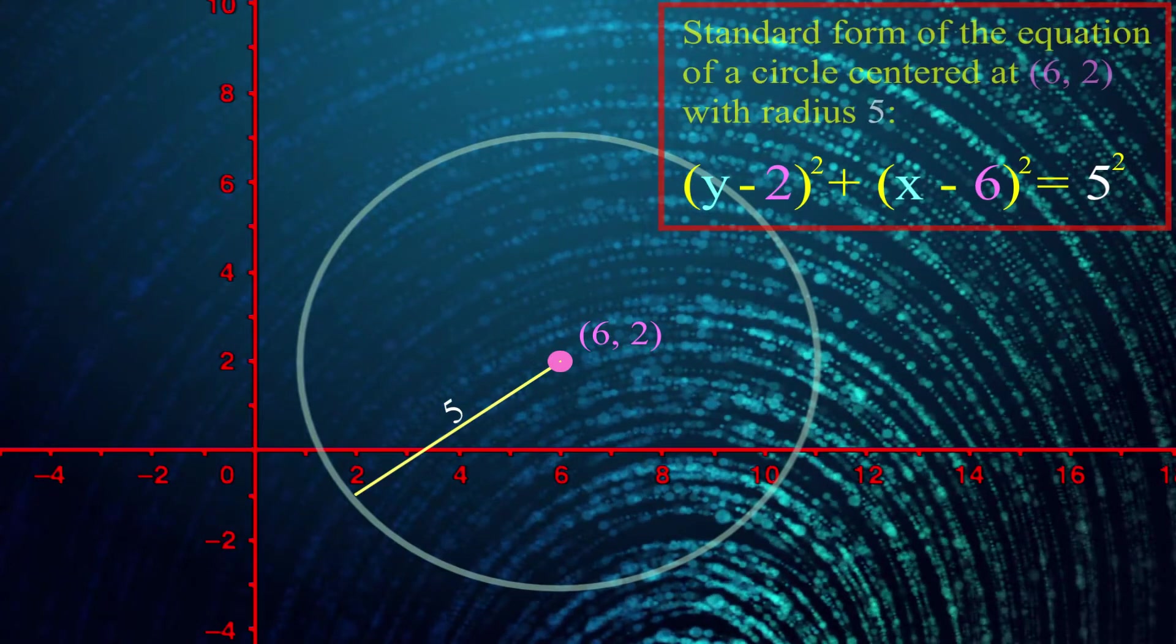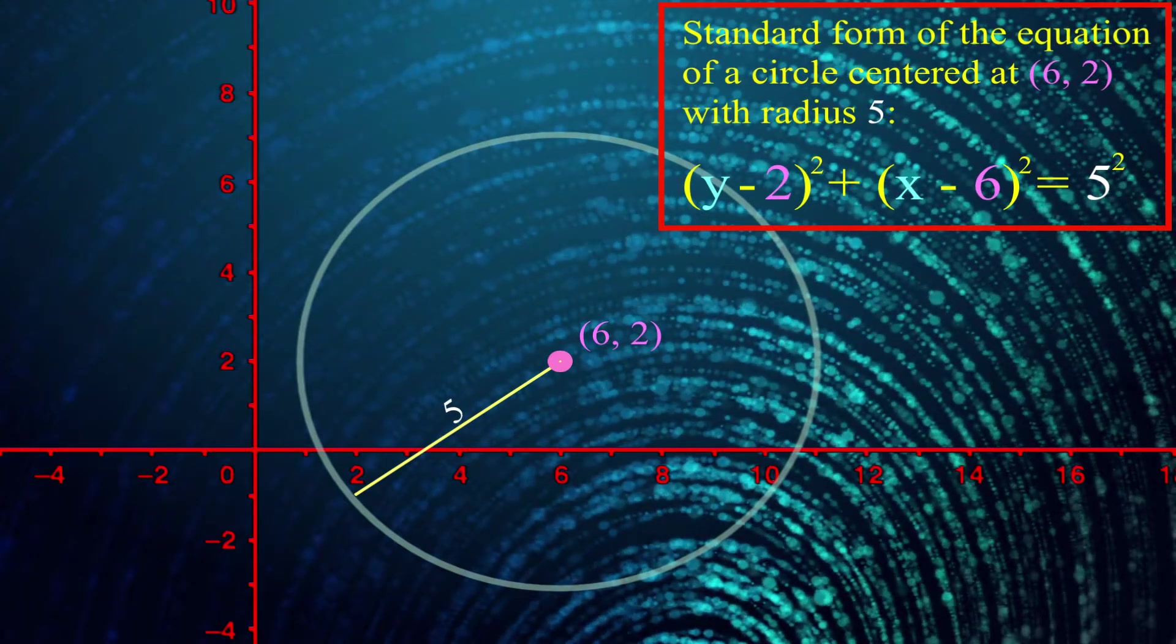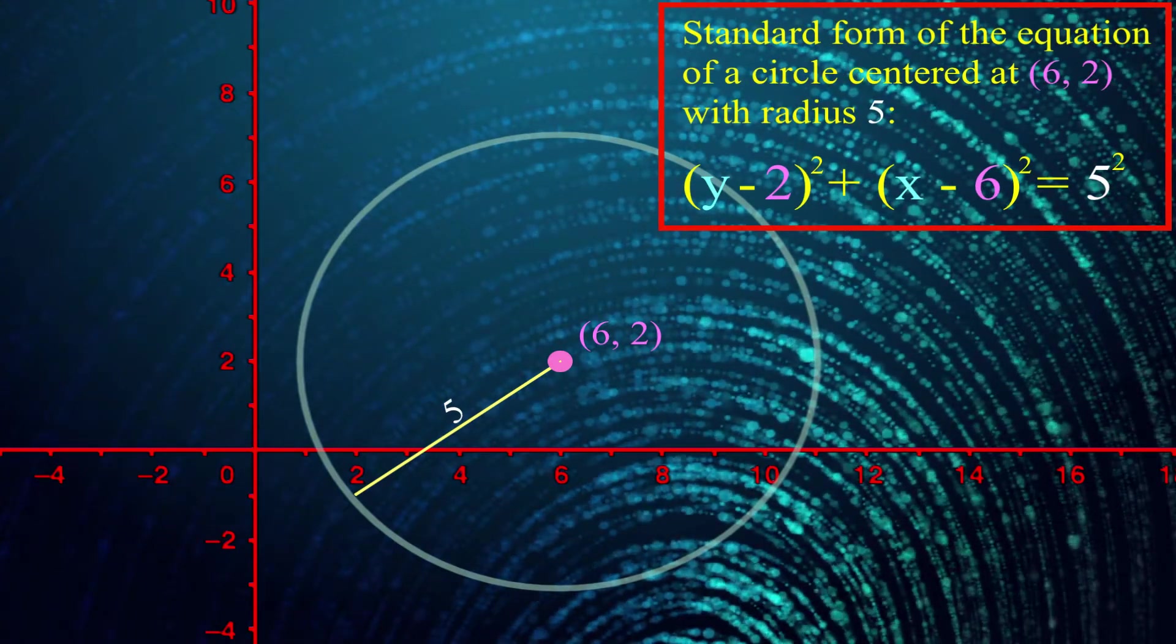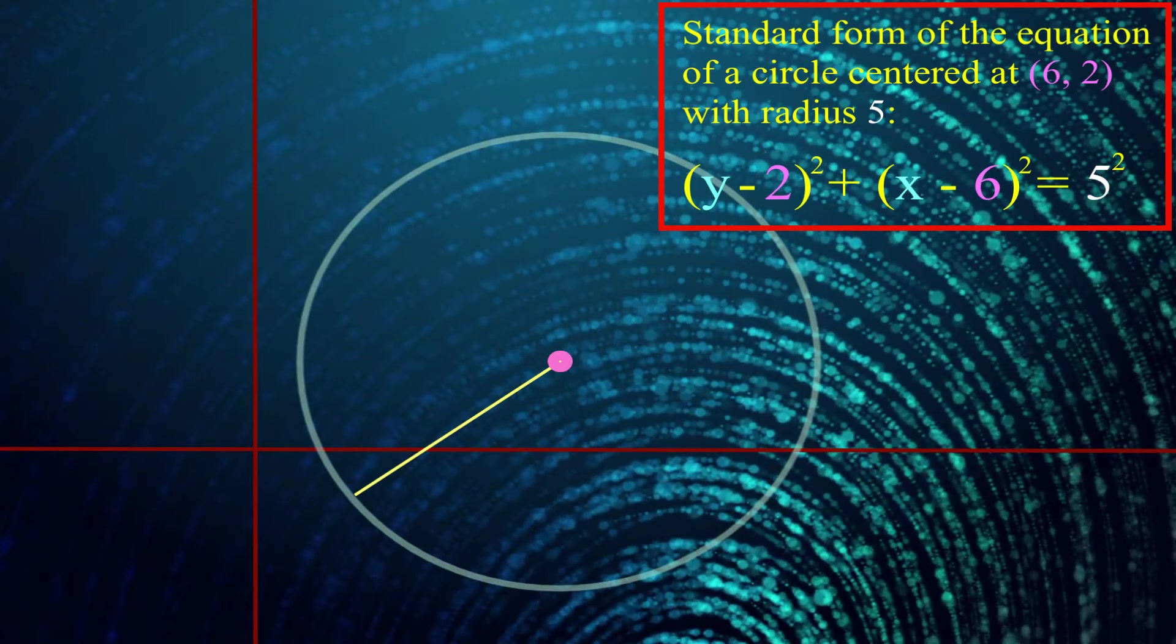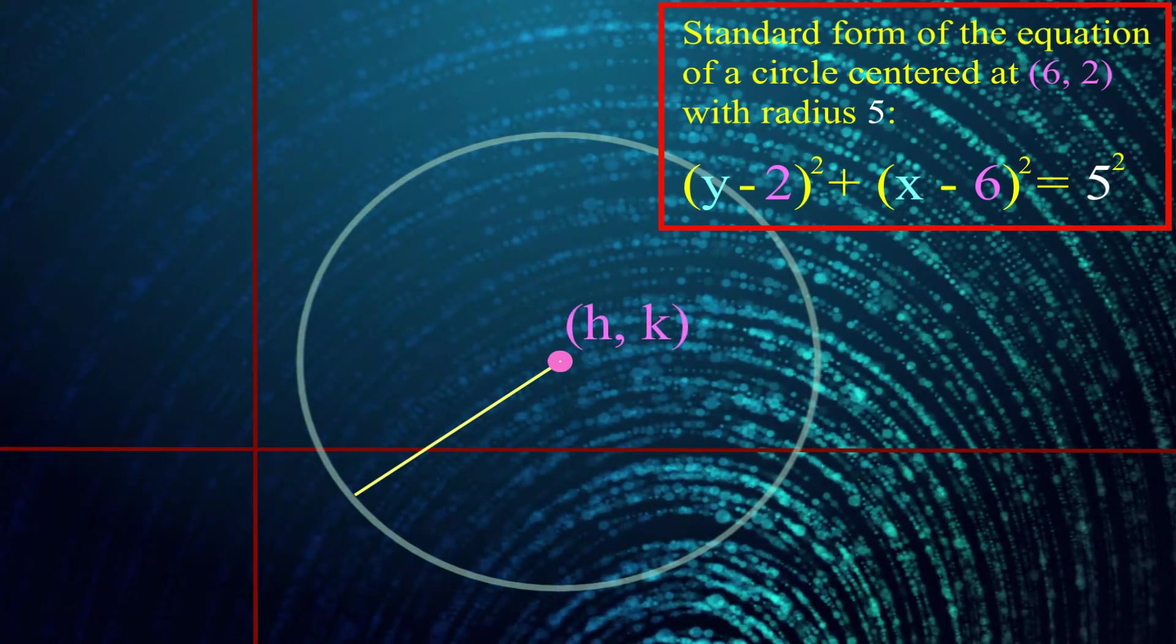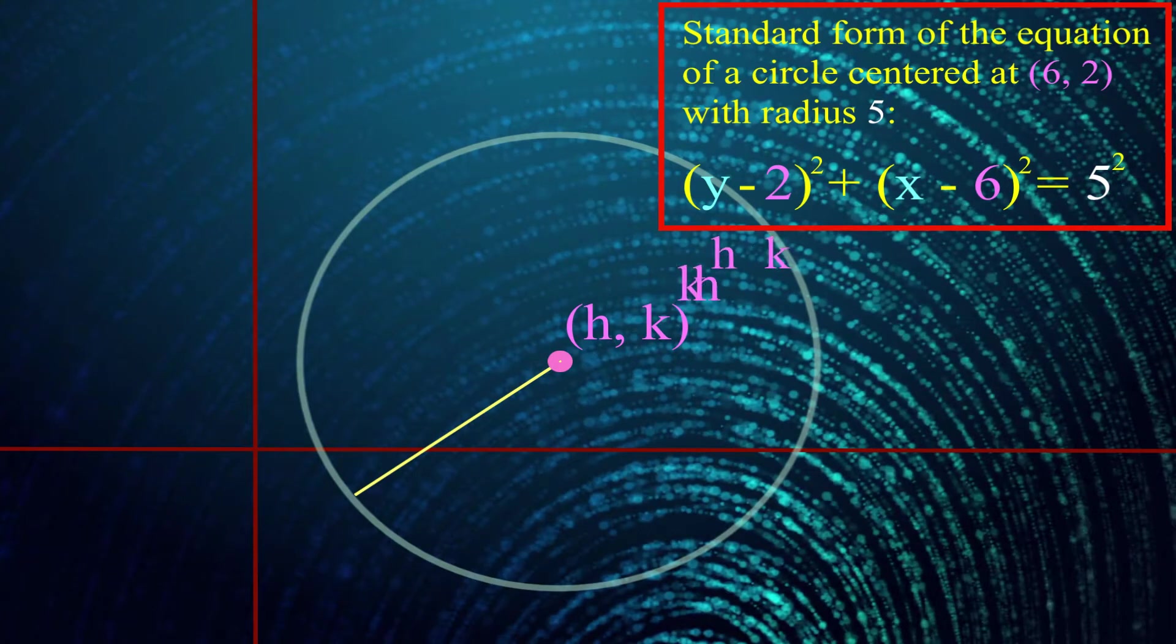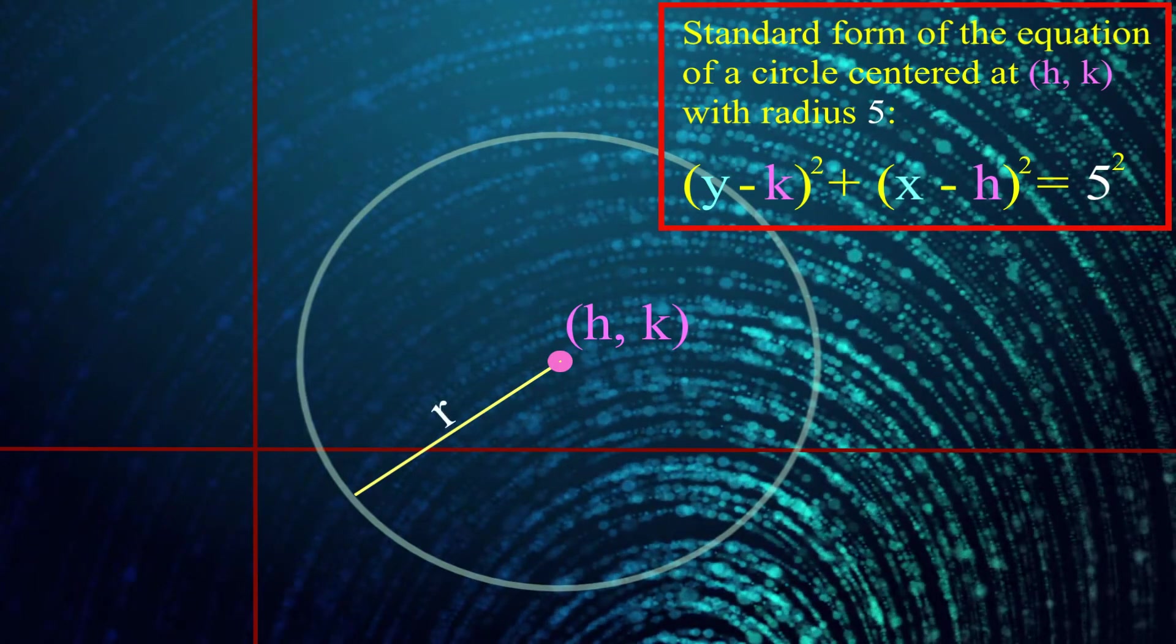We'll refer to this as the standard form of the equation of a circle. And since we don't want to just be able to talk about circles centered at (6, 2) with radius 5, maybe we'll use h and k respectively as the x and y coordinates of the center of the circle, and r to represent the radius.